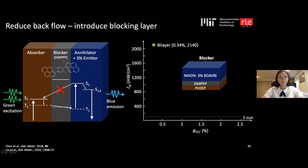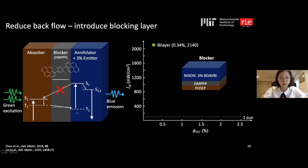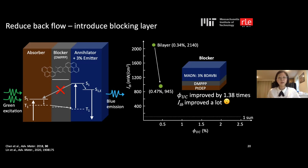The first strategy was to reduce backflow by introducing a blocker material called DNPPP. We chose it because its singlet energy is higher than the annihilator, making backflow endothermic, and its triplet energy sits between the absorber and annihilator triplets, allowing triplet transfer to still occur. The trick worked — efficiency improved and required excitation intensity was reduced significantly.